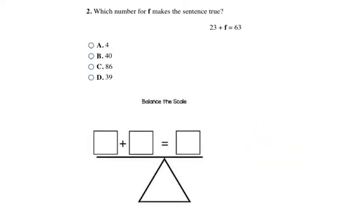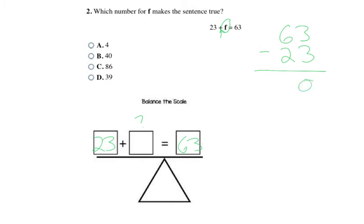Here I have a variable — a letter — and I need to find out what number that letter represents to keep both sides of the equation true. I have 23 plus some mystery number on the left side and 63 on the right side. Using opposite operations: since this is addition, I subtract — 63 minus 23 is 40.